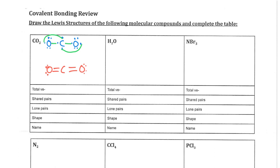So total valence electrons. Let's see, we had six, four, and six. That's 16. Shared pairs, there were four. Lone pairs, there were four. The shape here. There's no lone pairs in the carbon causing these two bonds to bend, so it's just going to be linear. And the name of this is carbon dioxide.